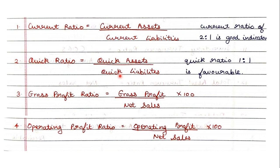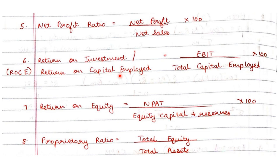These are the first four ratios — the most important ones I wanted to note down first, and then we'll jump to the next set. Next we have net profit ratio: net profit upon sales into 100.